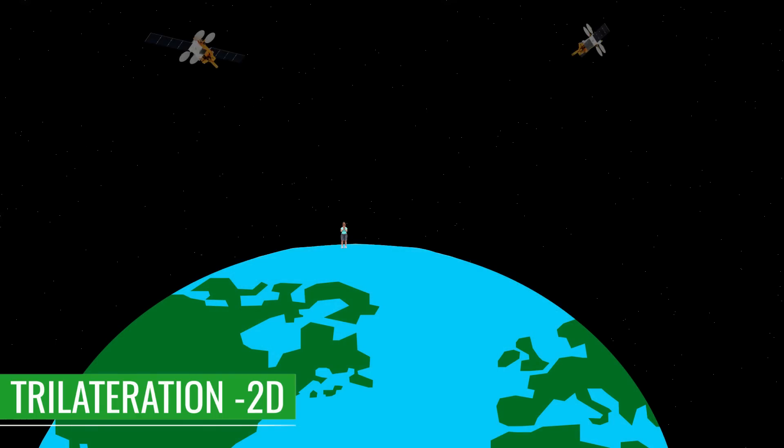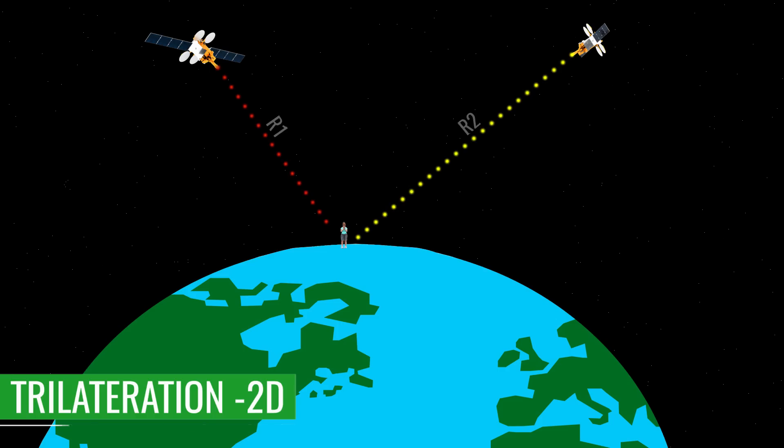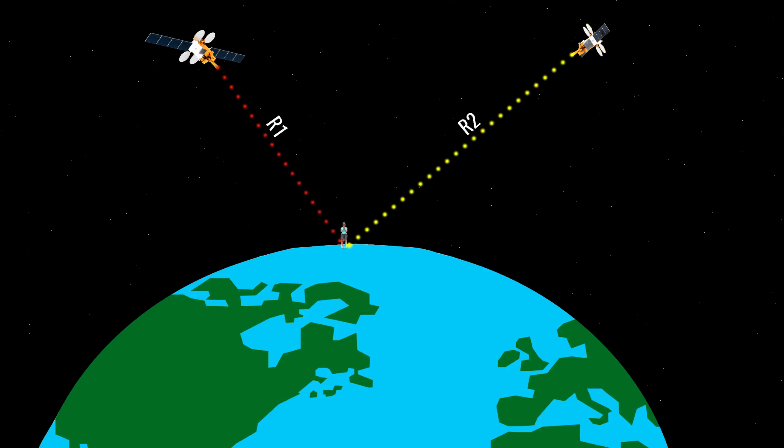At least two satellites are required to find out your position in two-dimensional trilateration. Using some engineering techniques, the satellites measure the distance between you and the satellites. We will see the techniques for doing this later. Now things are easy. The first satellite knows you are at a distance of R1, so you should be somewhere on this circle.